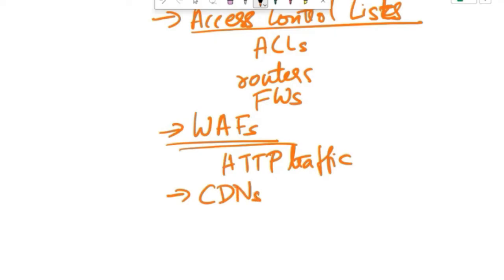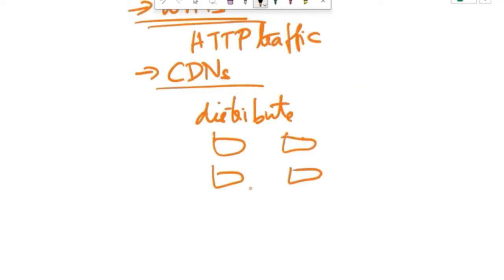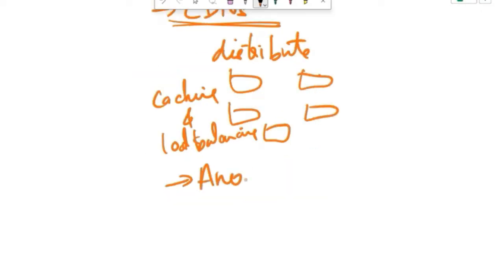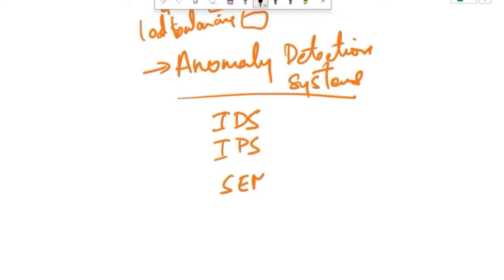Next is Content Delivery Networks, that is CDNs. CDNs distribute web content across multiple servers and data centers, reducing the impact of DDoS attacks by distributing traffic and providing caching and load balancing services. Next one is to use Anomaly Detection Systems. These can monitor network behavior and alert administrators to deviations from normal patterns. Deviations from normal patterns signal potential DoS or DDoS attacks. Intrusion Detection Systems, Intrusion Prevention Systems and SIEM Solutions, that is Security Information and Event Management Platforms, incorporate anomaly detection capabilities for threat detection and response.